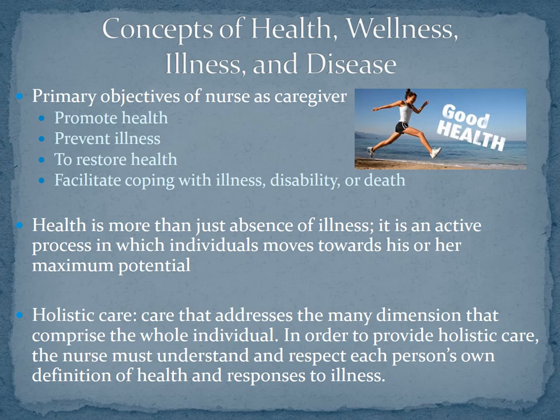Health is more than just an absence of illness. A person could have an illness but still be healthy, because health is an active process in which individuals move towards their potential. It's an active process where we move towards our maximum potential. So if someone, let's say, were in the military and they have a below-the-knee amputation — are they still healthy? Of course they are, because as nurses, we can help facilitate coping with their illness and help them reach their maximum potential. We would really consider that person healthy.